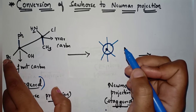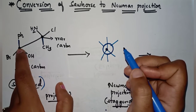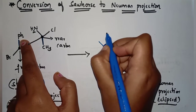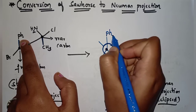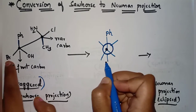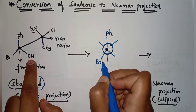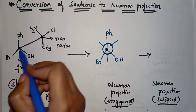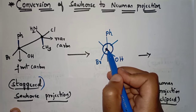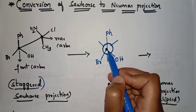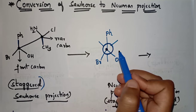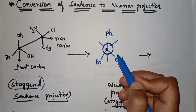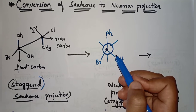For the front carbon, the groups attached are phenyl, Br, and OH. So here I am writing phenyl at the top, Br on the left side, and OH on the right side. This dot represents the front carbon, and we have now correctly represented the groups on the front carbon.